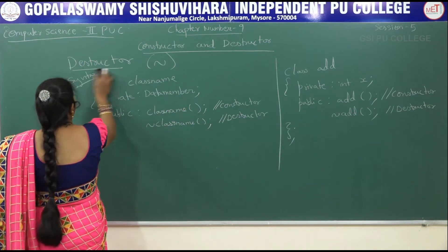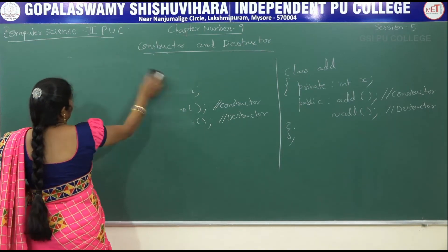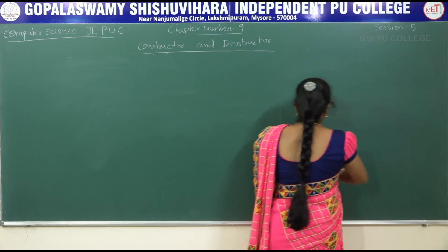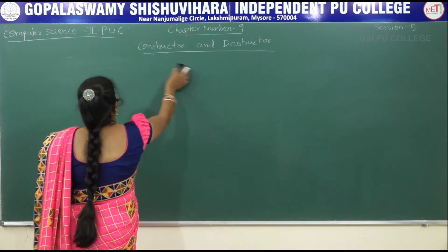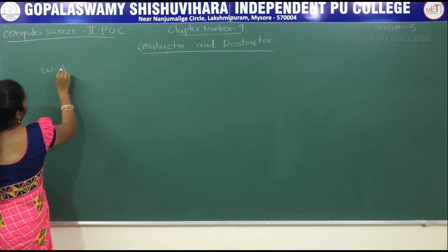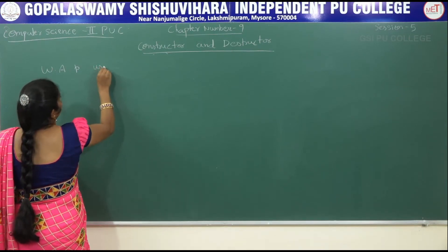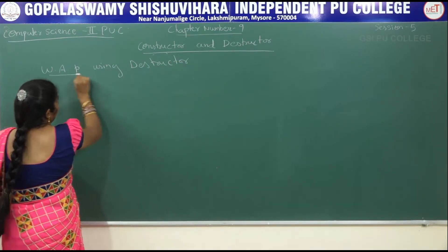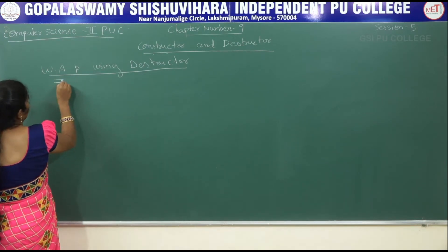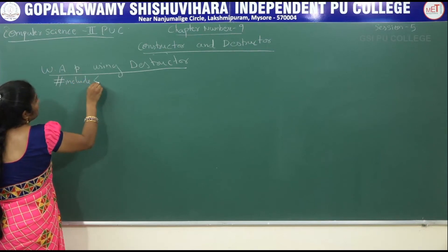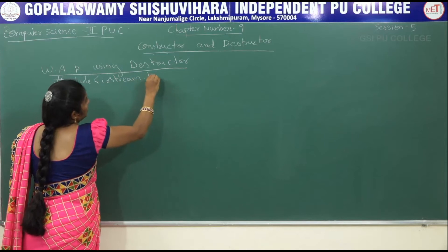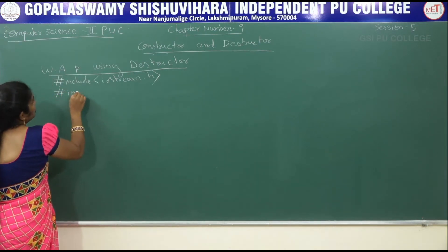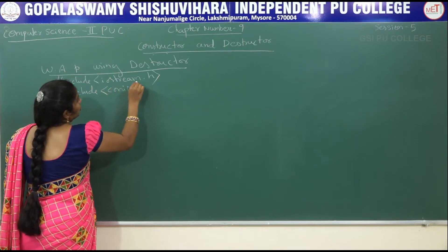In the exam, if they ask you to write a program to demonstrate the Destructor, follow the constructor format — display a value, then call the Destructor function. Let me write an example program using Destructor to display some values. Start with the header files: #include iostream.h, which supports cin and cout, and #include conio.h, which supports clrscr and getch.